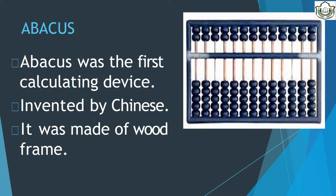Abacus was the first mechanical device used for calculation. It was developed by Chinese around 5000 years ago. It was made up of a wooden frame with rods. The frame was divided into two parts — heaven and earth. The upper part of the frame is known as heaven and the bottom part is known as earth.